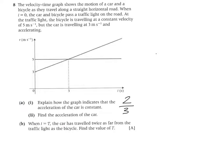But now question B, which is more interesting I assume. When T is T, the car has traveled twice as far from the traffic lights as the bicycle. Find the value of T. Now there are several ways of approaching this question, as usual the case is. Let me just do it my way.